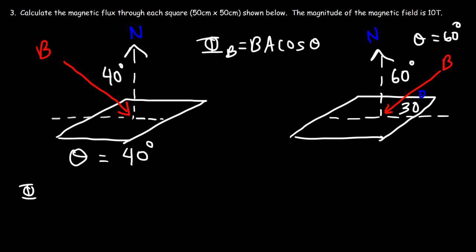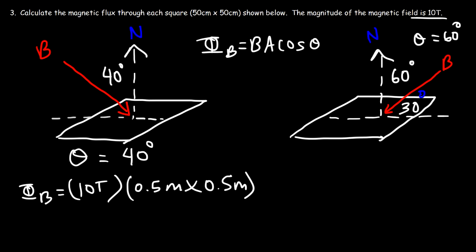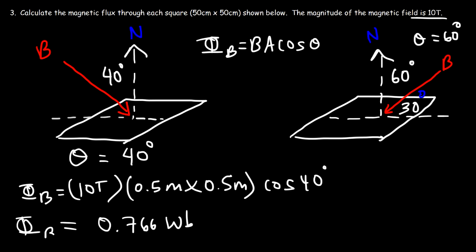For the first square: the magnetic field is 10 tesla, and the area of the square is length times width — 50 centimeters is 0.5 meters, so 0.5 times 0.5. Multiply by cosine of 40 degrees. You should get 0.766 webers for the magnetic flux of the first example.